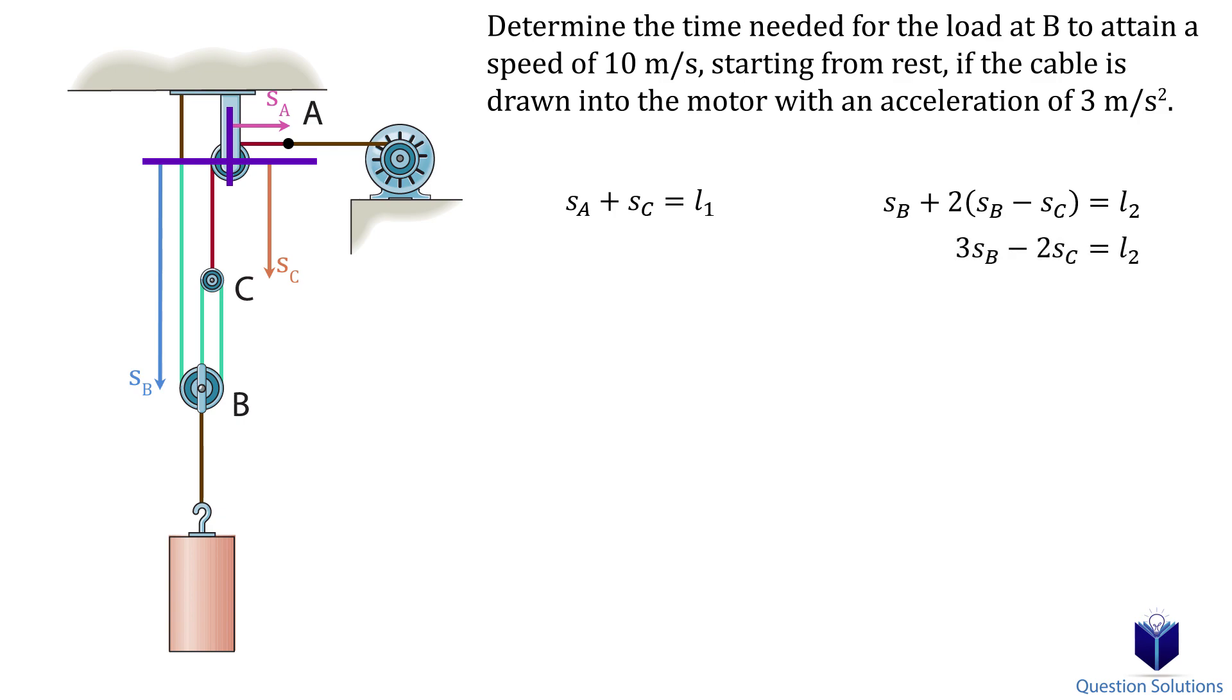Now we can take the derivative. That gives us velocity. But notice how the question says the motor draws the cable with an acceleration of 3 meters per second squared. So we actually have to take the derivative again to get the acceleration. That way, we can plug our value in. So taking the derivative again gives us this.